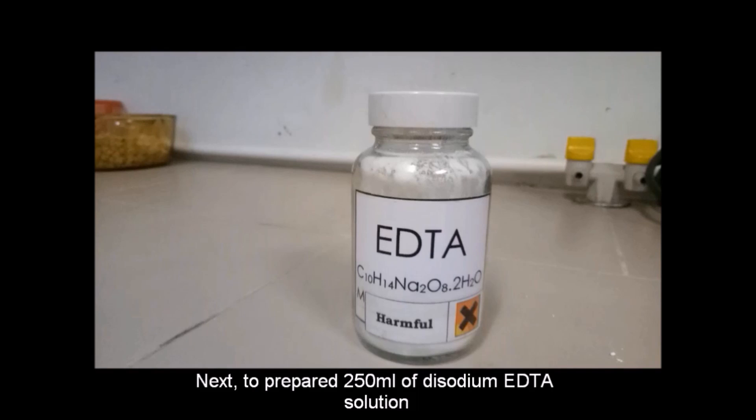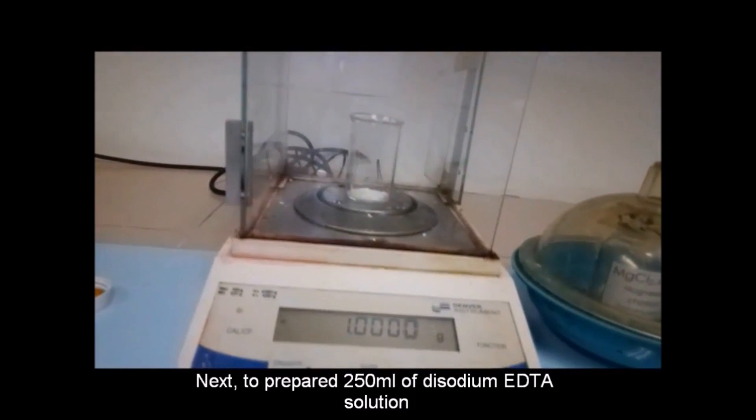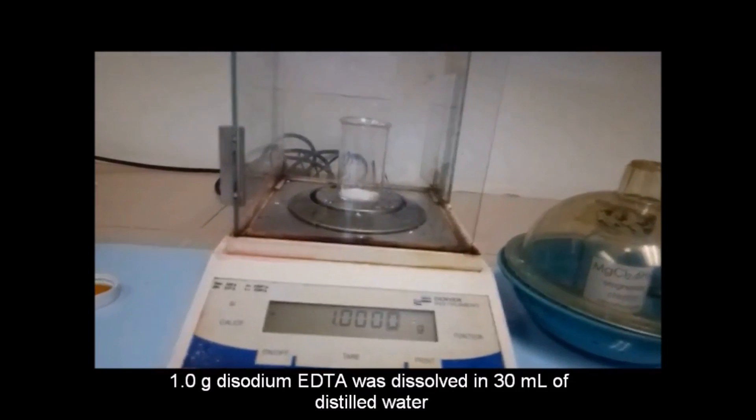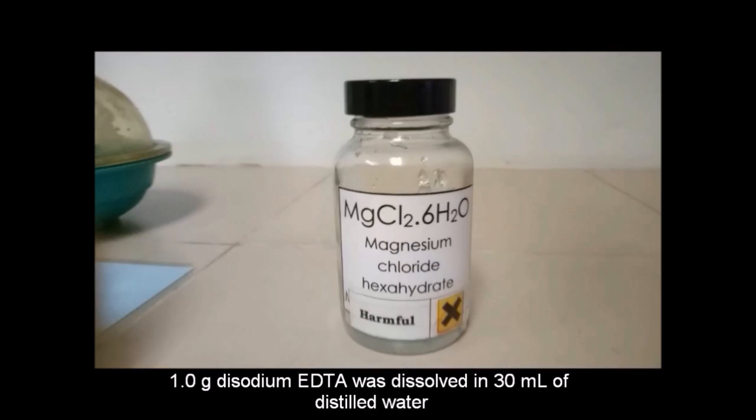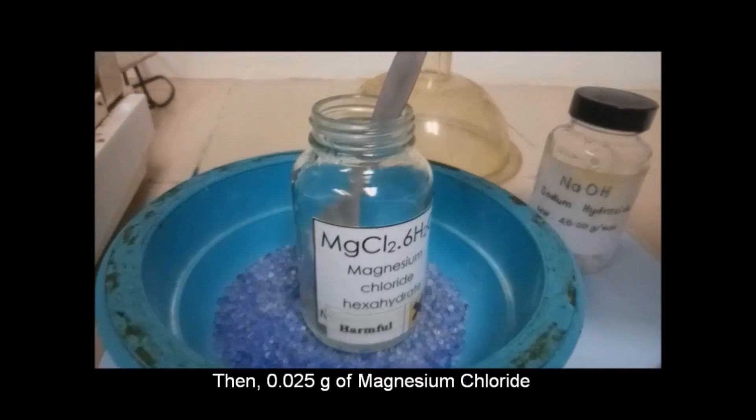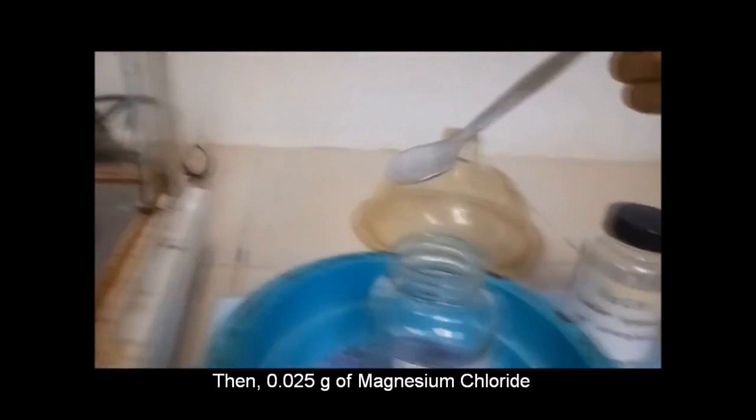Next, to prepare 250 ml of disodium EDTA solution, 1 g of disodium EDTA was dissolved in 30 ml of distilled water, then 0.025 g of magnesium chloride was added.